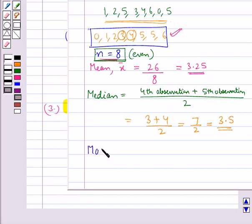Now mode. As we know, mode is the observation with the maximum frequency. So from this data, we have that 5 is occurring 2 times, that is, it has the maximum frequency. So mode is 5.